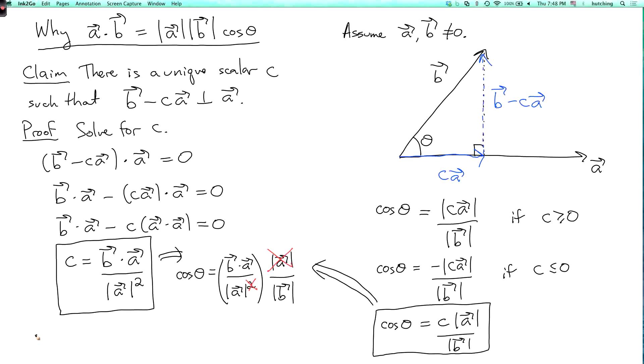By the way, the vector c a is called the orthogonal projection of b onto a. So we're not going to do too much with orthogonal projection in this course, but it's a useful concept in general.